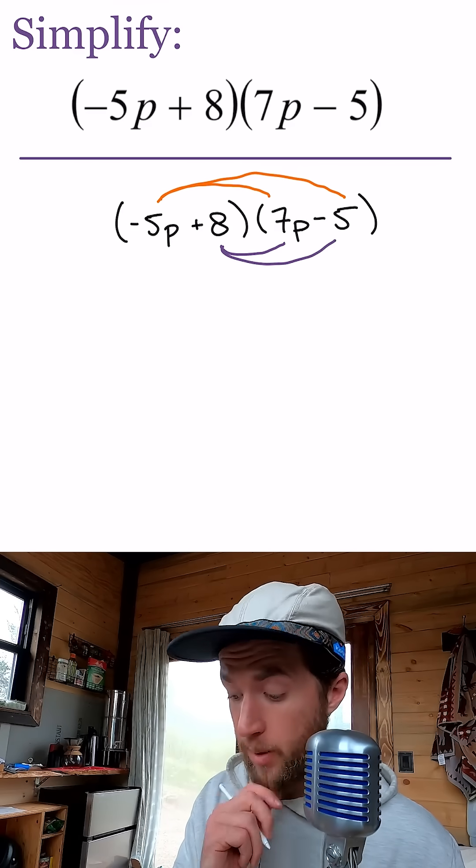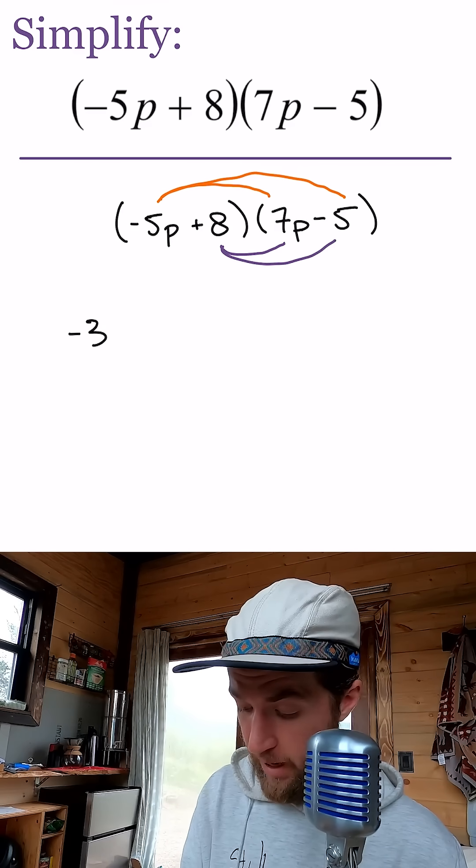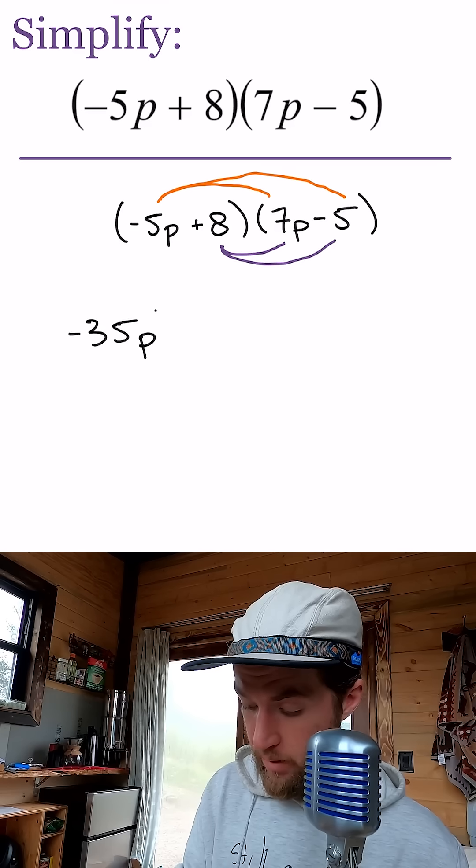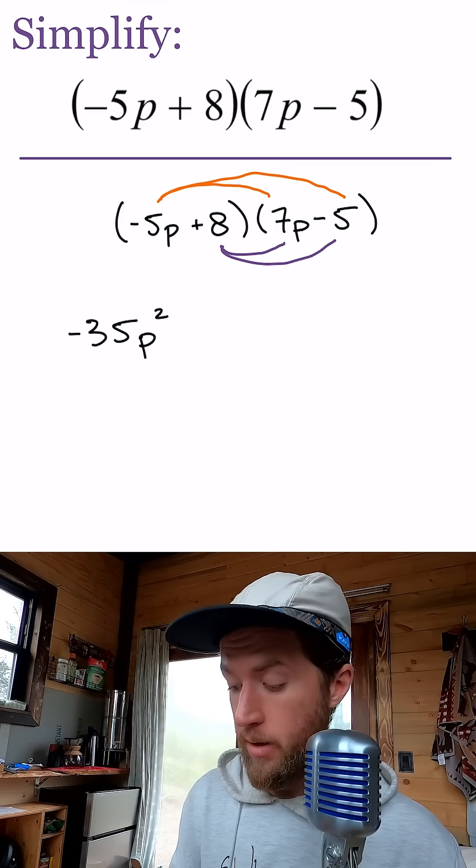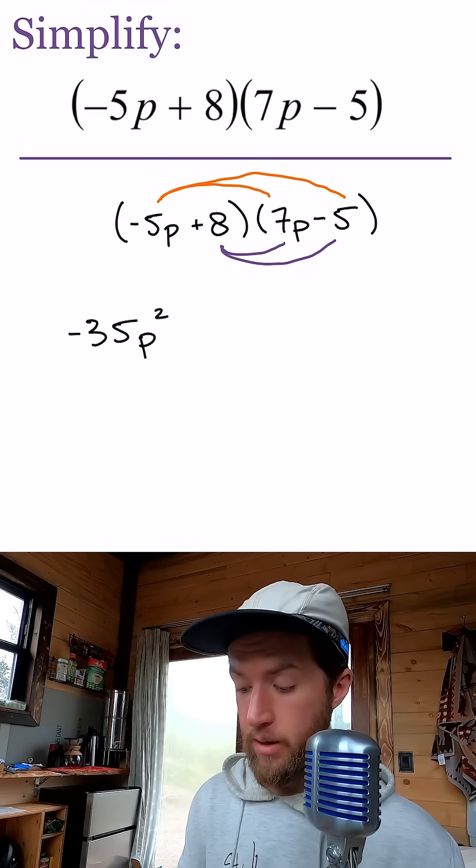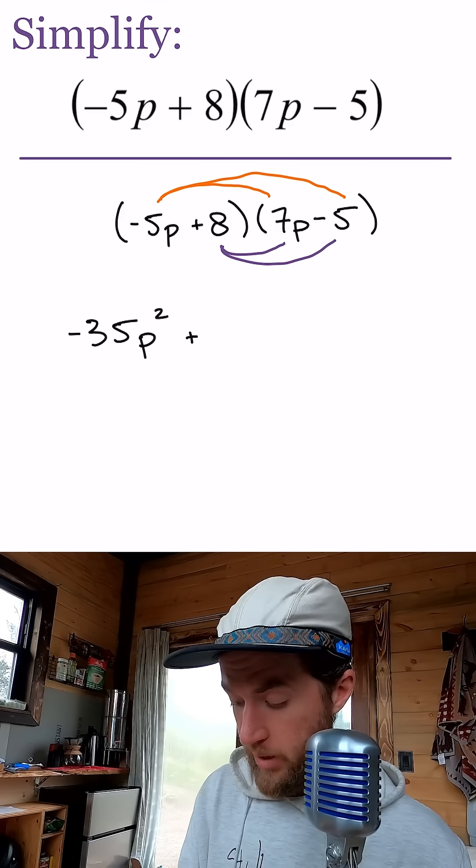So negative 5p times 7p is negative 35p times p, or p squared, or pp. And then we have negative 5p times negative 5, so positive 25p.